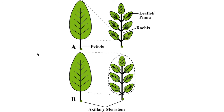Hello students, today we are going to study about leaves. There are two types of leaves present on plants. One is simple leaf and another one is compound leaf. Many leaves together on a single twig is called a compound leaf, and one leaf only present on one twig is called a simple leaf.